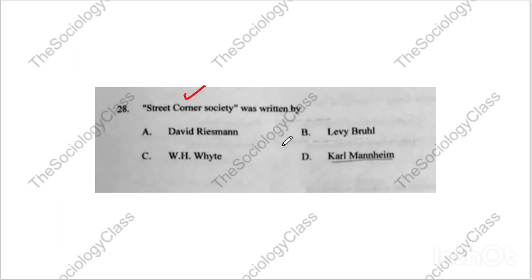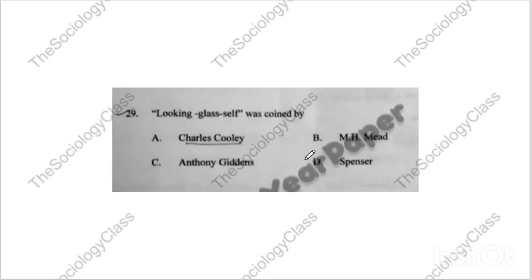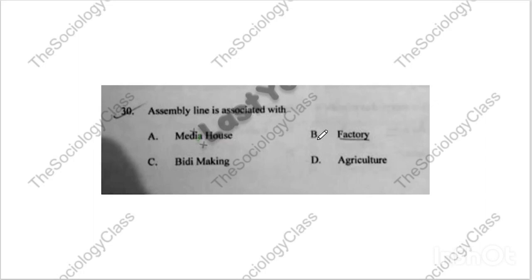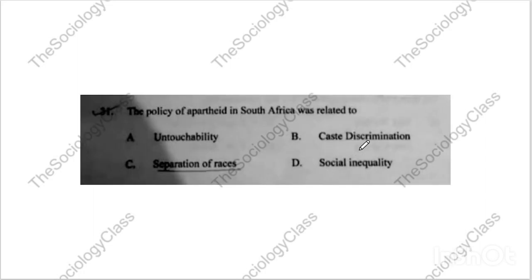Question number twenty-eight — very easy: 'Street Corner Society' was written by W.H. Whyte. I am going through questions quickly now. If you have any problem with a question, let me know in the comment section. Most of these are easy and direct questions. For questions needing explanation, I have added notes. If you have been following this channel from the start, you should know answers like 'Looking Glass Self' — correct answer is Charles Cooley, i.e., C.H. Cooley.